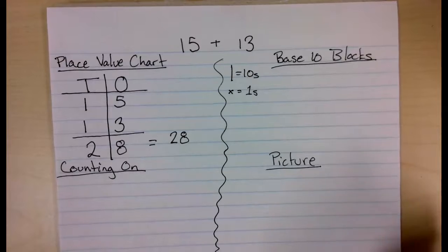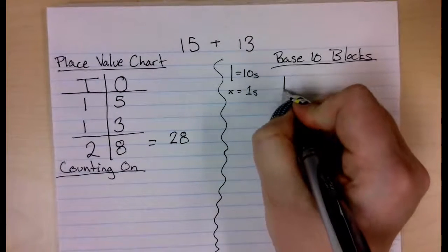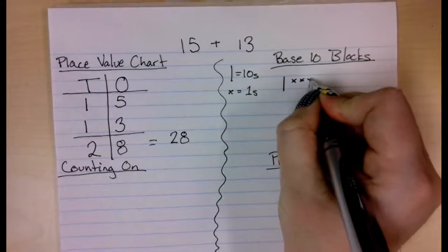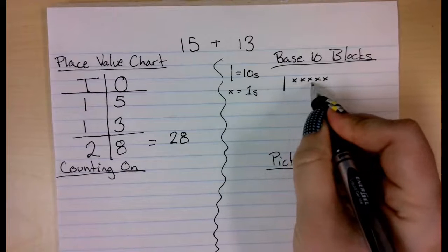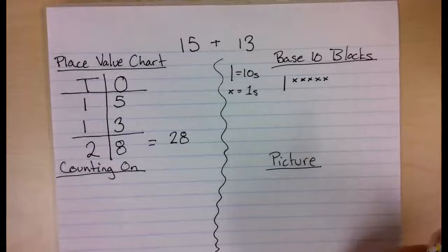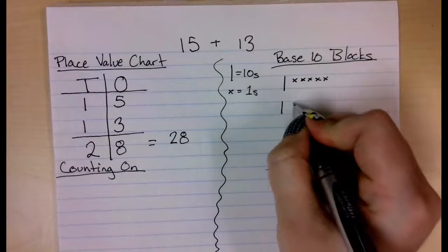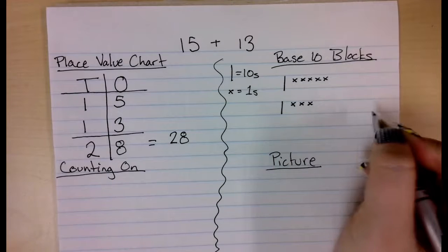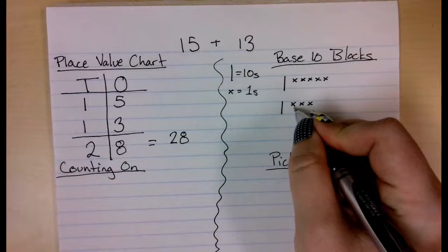I am going to draw 15, so I have one 10, and 5 ones, so 10, 11, 12, 13, 14, 15. And then I am going to draw 13, so I have a 10, and 3 ones, so 10, 11, 12, 13.